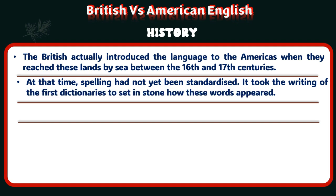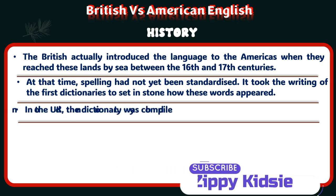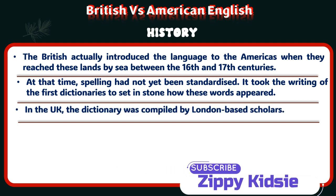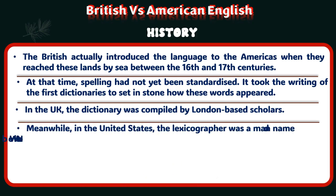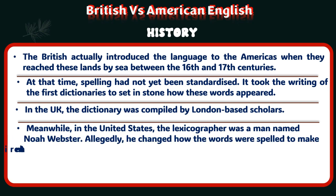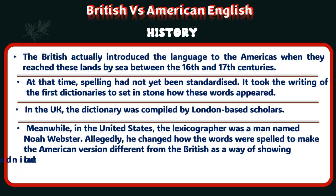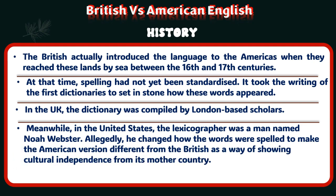It took the writing of the first dictionaries to set in stone how these words appeared. In the UK, the dictionary was compiled by London-based scholars. Meanwhile, in the United States, the lexicographer was a man named Noah Webster. Allegedly, he changed how the words were spelled to make the American version different from the British as a way of showing cultural independence from its mother country.